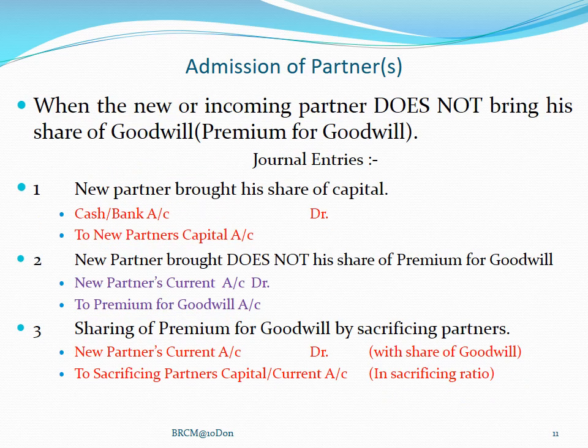Sometimes it happens that the new partner does not bring his share of goodwill at all — when the new incoming partner does not bring his share of goodwill. In that case, since no premium has come in, we will transfer the full premium from his current account. The entry can be made in two ways: either new partner's current account debited to premium for goodwill account, and then premium for goodwill account debited to sacrificing partner; or directly, new partner's current account debited to sacrificing partners' current or capital account with the amount of the share of goodwill.